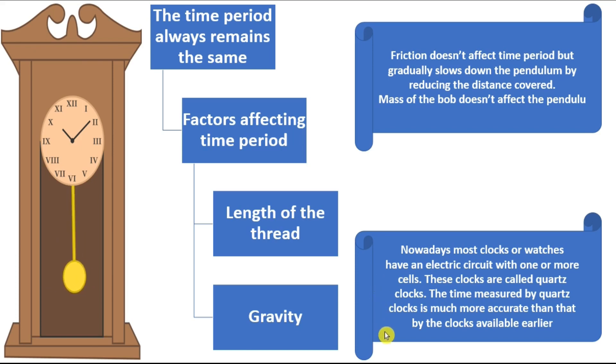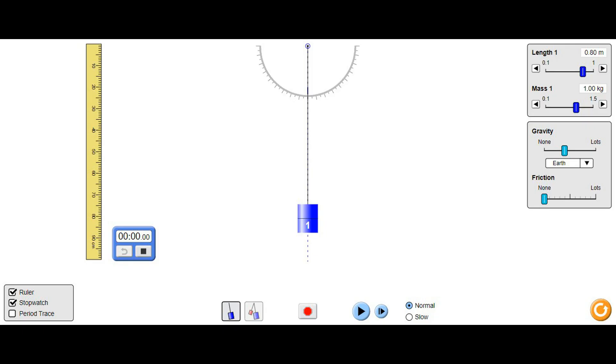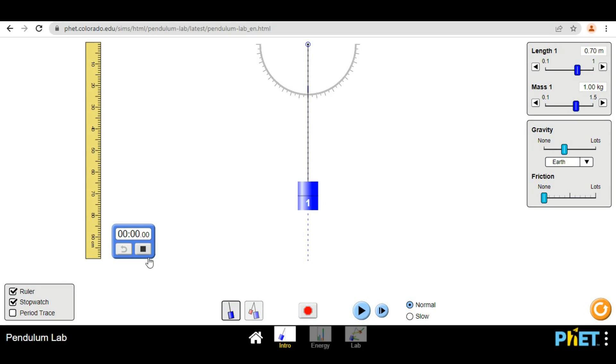Nowadays, most clocks or watches have an electric circuit with one or more cells. These clocks are called the quartz clocks. The time measured by the quartz clocks is much more accurate than the clocks available earlier. Now to see the factors affecting the time period, we will go to the pendulum. Welcome to the Virtual Science Lab. The reason I've decided to do this experiment virtually is because I can change the gravity and the friction which I can't do in reality.